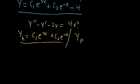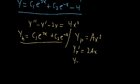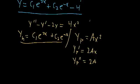You might think to try y_p = ax², since g(x) is a constant times x². If we do this, the first derivative is 2ax and the second derivative is 2a. Plugging these in, we'd get a constant minus an x term minus two times an x² term, and that has to equal x² — but this doesn't work because we have x terms and constants on the left-hand side that aren't present on the right-hand side. So just ax² won't cut it.